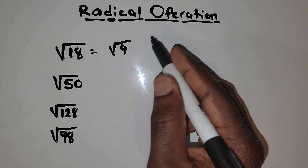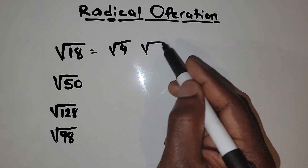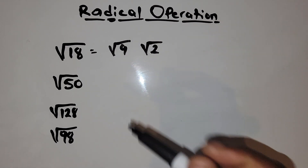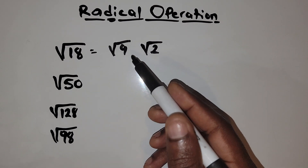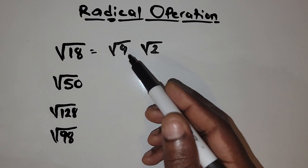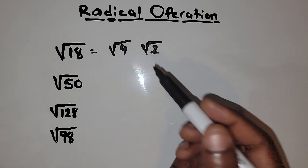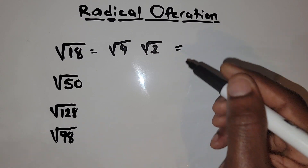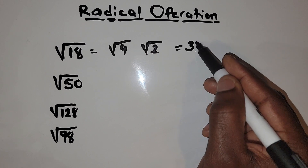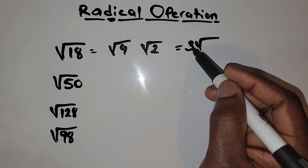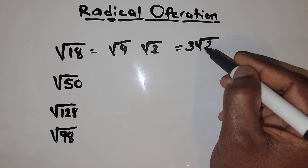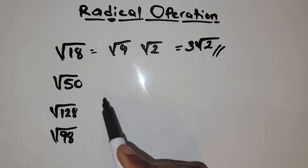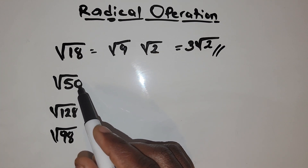So we write 9 times 2. Here 9 times 2 is 18. And then 9 can still be simplified. What number can go into 9? 3 times 3 is 9. So we get 3, and the answer is 3 times the square root of 2. Let's move to the next problem.